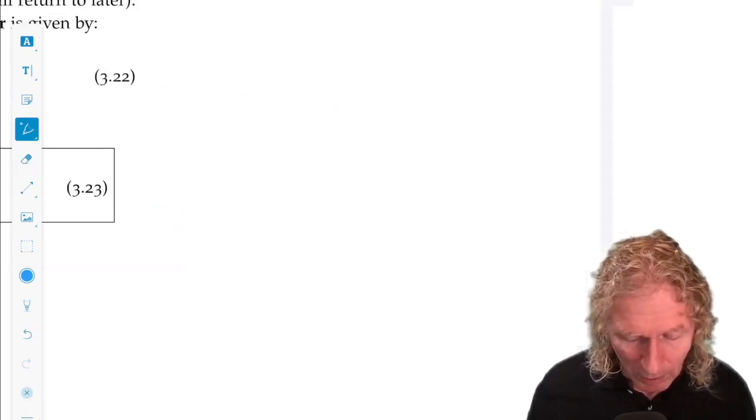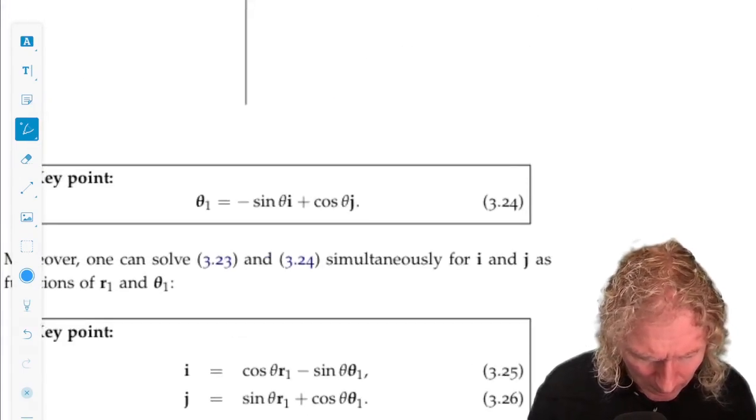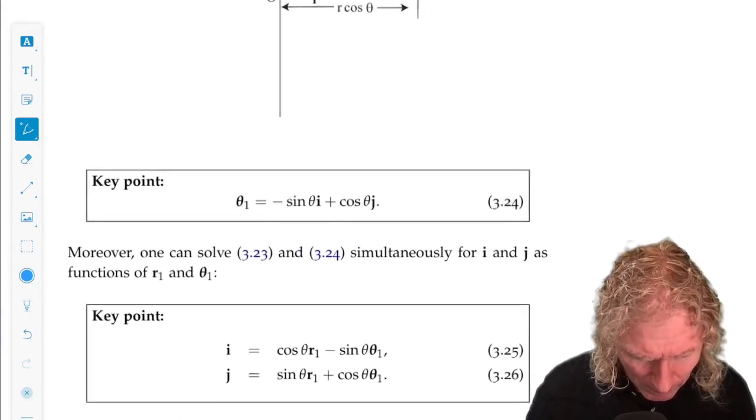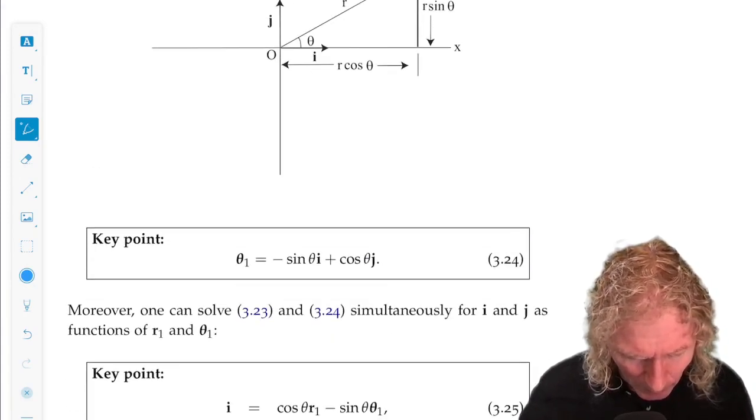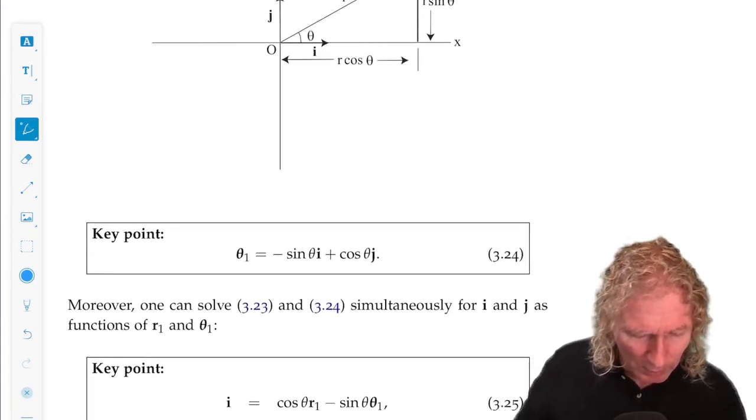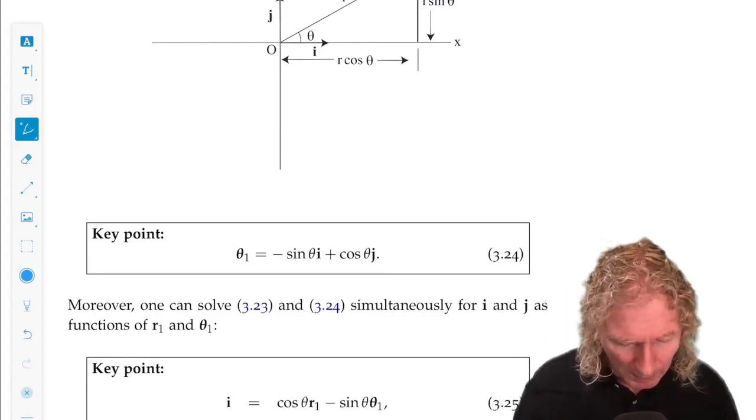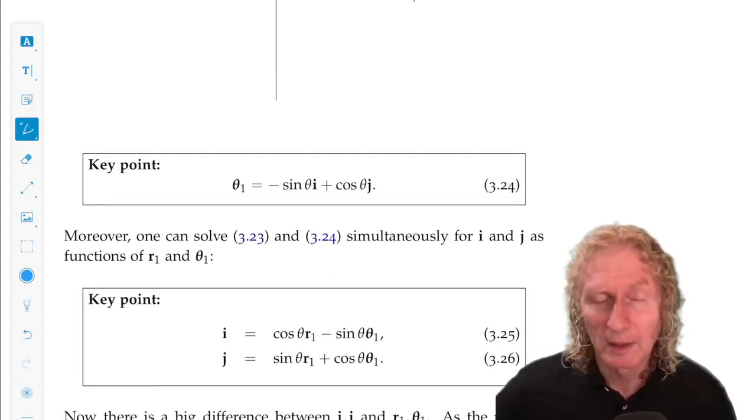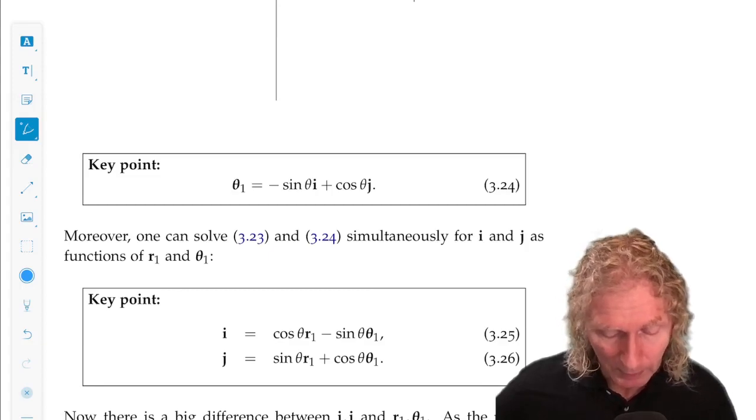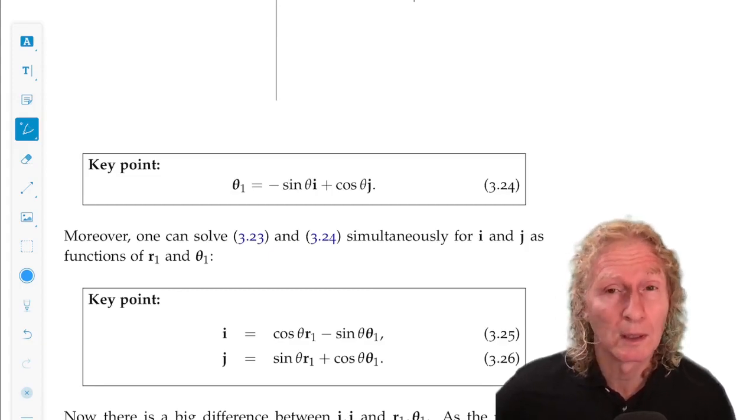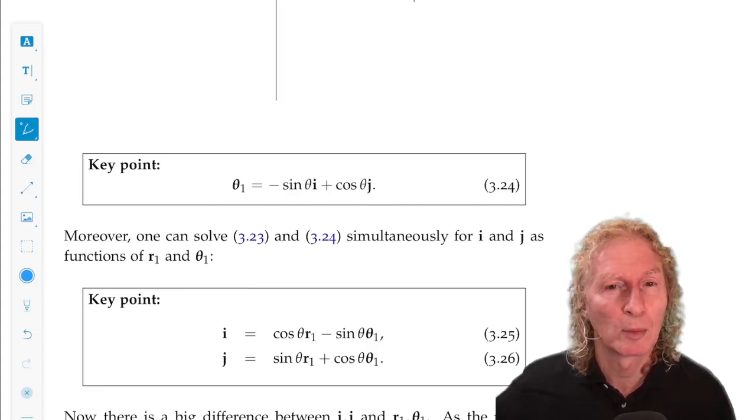All right, what about theta? Well, using the same bit of geometry, you can check that theta1 is minus sine theta i plus cosine theta j. You can check that it is unit length, and you can check that it is perpendicular to r1 just by taking the dot product of the two.